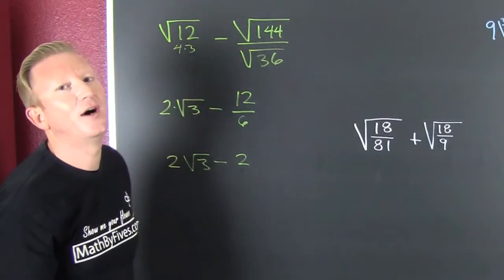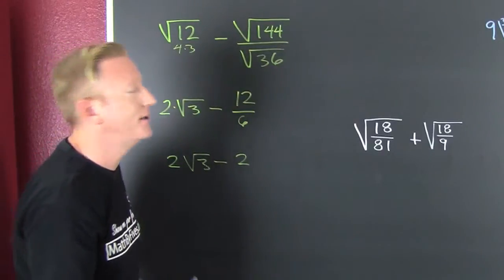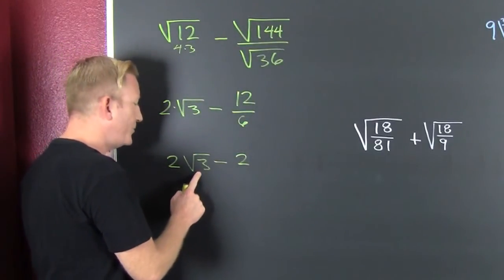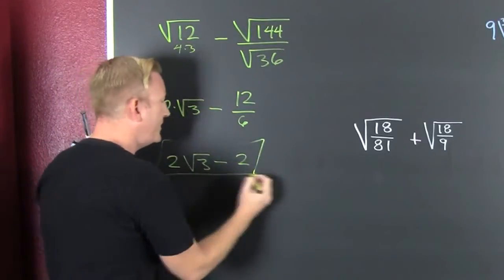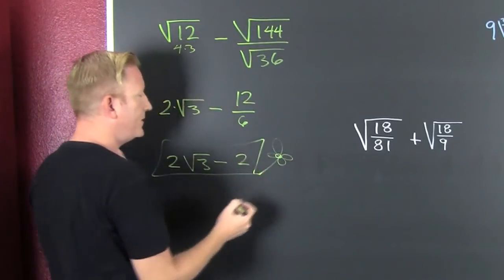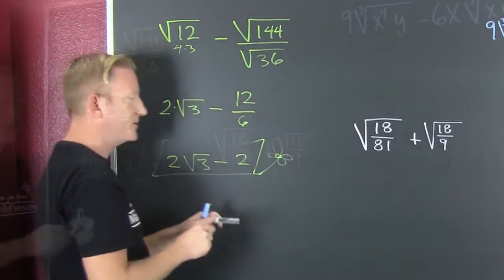Those twos are alike, can I add those? No, it's that irrational root 3 that keeps these twos apart because those aren't like radicals.